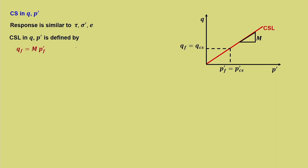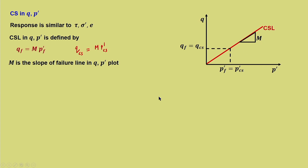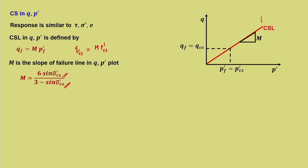The reference points at P' = 1 kPa are: N₀ for NCL, V_κ for the unloading-reloading line, and Γ (gamma) for the critical state line. The equation for CSL in V–ln(P') space is: V_f = Γ − λ · ln(P'_F). For the compression case, M = 6 · sin(φ'_CS) / (3 − sin(φ'_CS)). M is different for the extension case, but here we focus on compression.